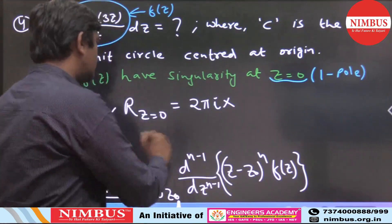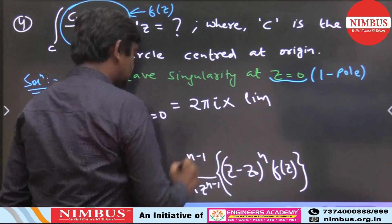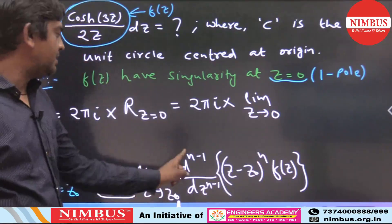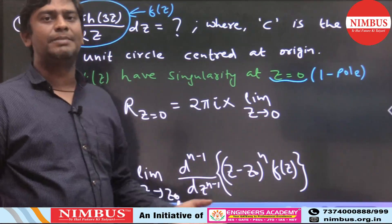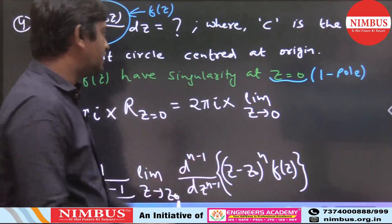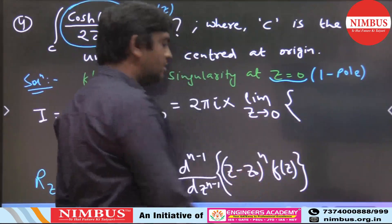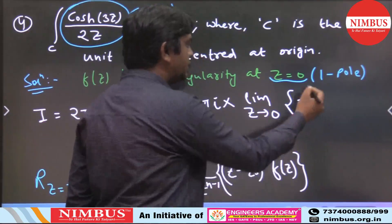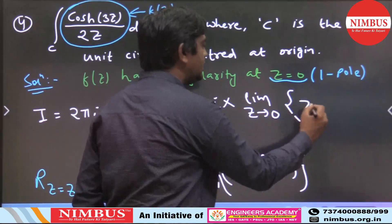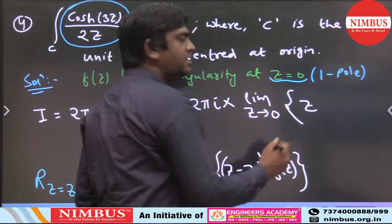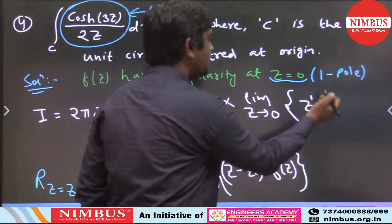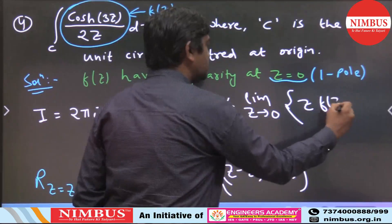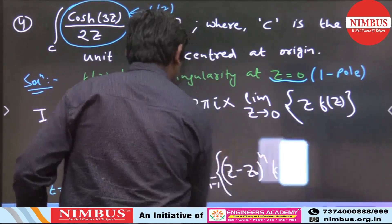The residue formula for a pole of order n at z = z₀ is: limit as z → z₀ of the (n-1)th derivative of (z - z₀)^n · f(z), divided by (n-1)!. Here n = 1, so (n-1)! = 1, and there is no differentiation needed (0th derivative). So the residue = limit z → 0 of z · f(z).